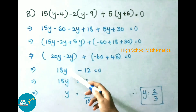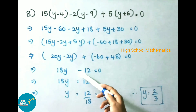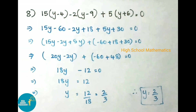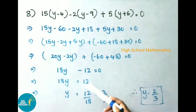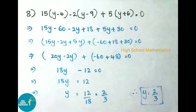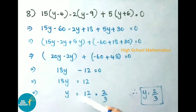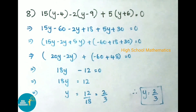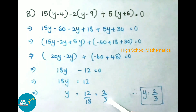20y minus 2y is 18y, and minus 60 plus 48 is minus 12. So 18y minus 12 equals 0. That implies 18y equals 12 on transposing. Now y equals 12 by 18. 6 twos are 12, 6 threes are 18, so y equals 2 by 3.